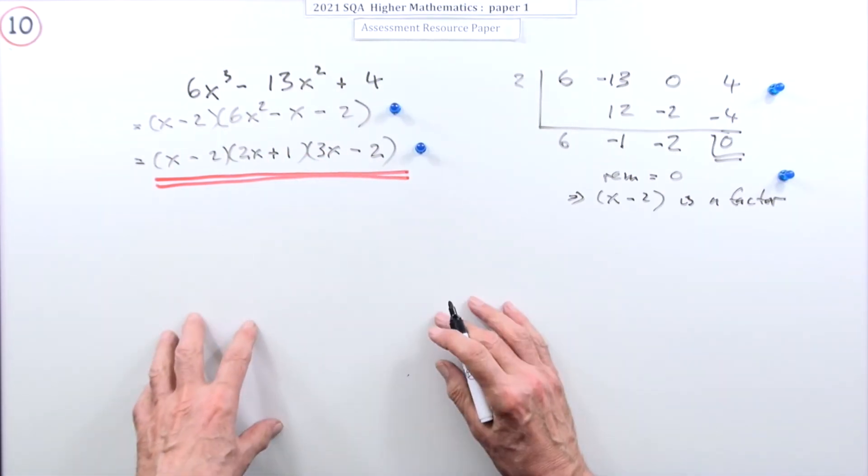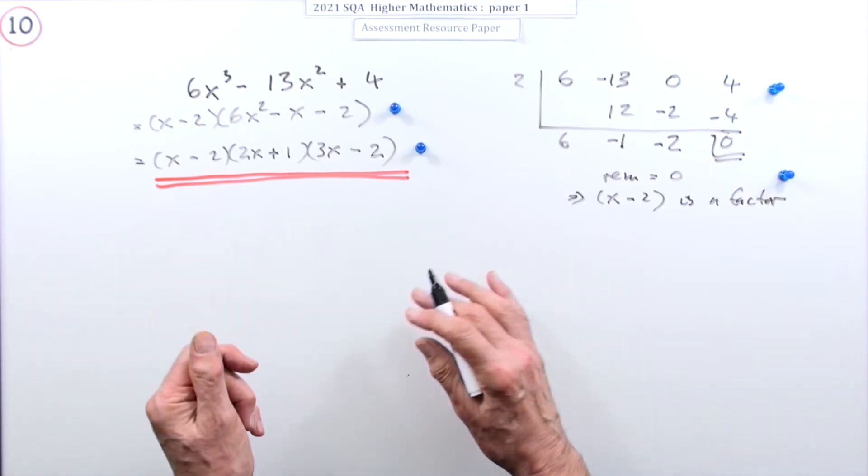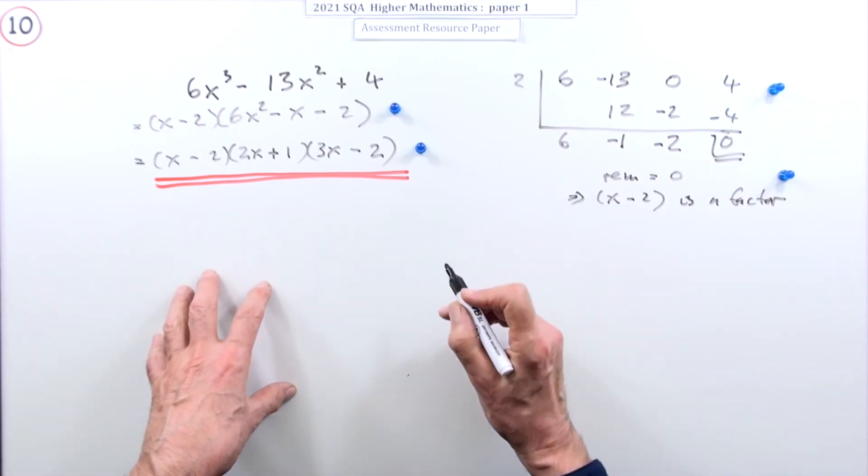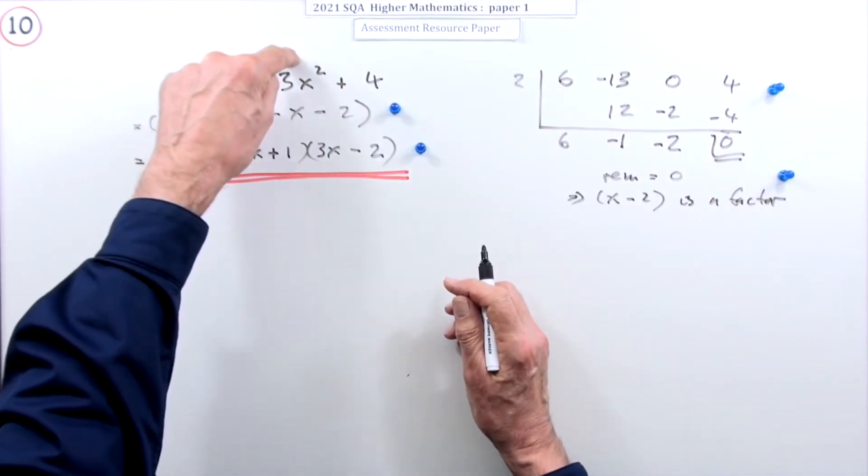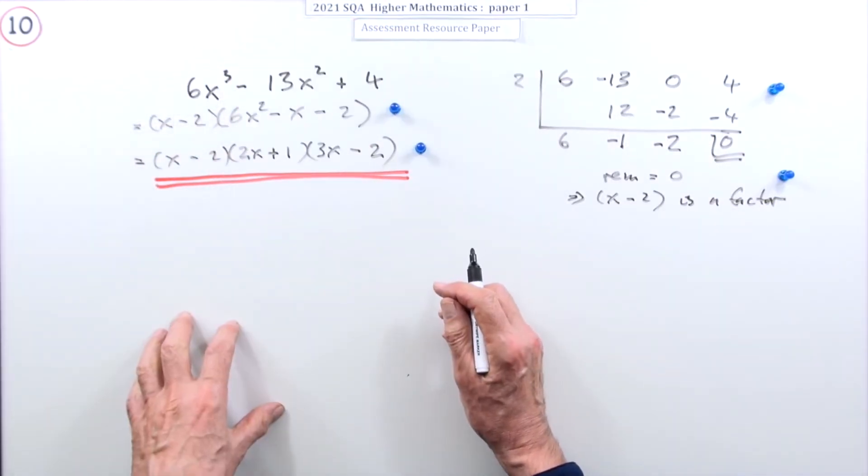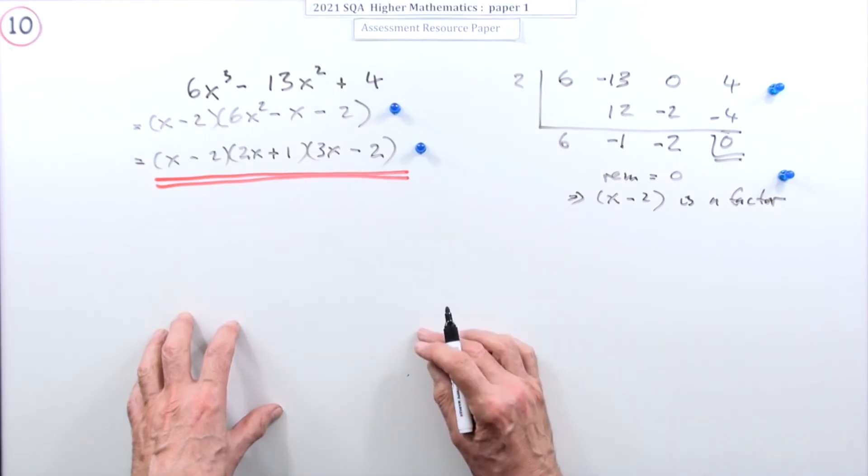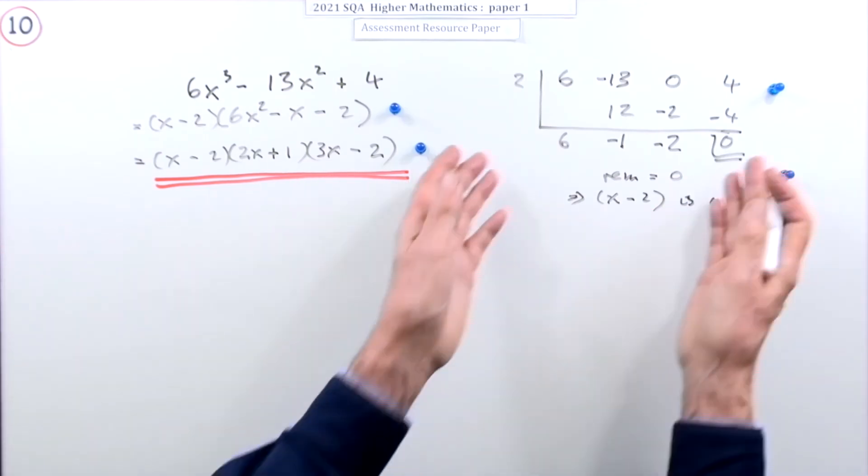Now it does mention, or in the marking scheme there's not a lot in the marking scheme because it wasn't a real exam, but it does say, or instead of doing this you could just try and use this part to find a number that works to give zero as an answer.